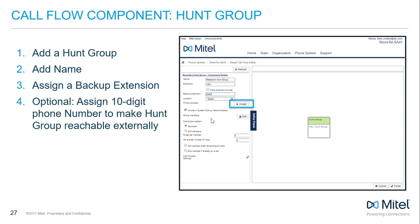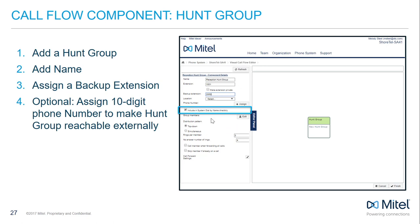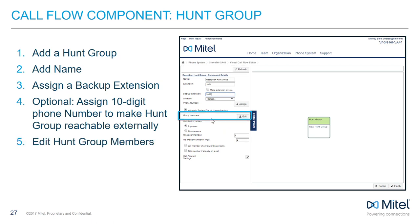If you wish to make this hunt group reachable by external callers, click the Assign button next to the phone number and choose from the list of unused 10-digit telephone numbers available on your account. If a 10-digit telephone number is assigned, this hunt group can be reached by both external and internal callers. The dial-by-name directory allows the hunt group to be included in your directory.